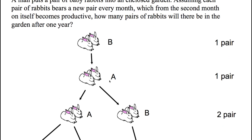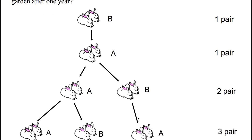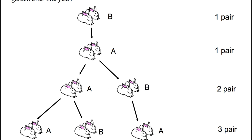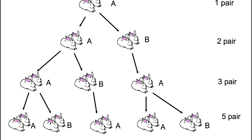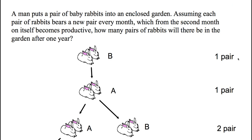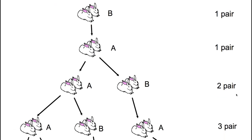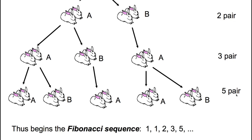The B stands for baby and the A stands for adult. We have one pair of baby rabbits in the garden to start. That pair of baby rabbits becomes adults a month later. Once they're adults, they produce a pair of baby rabbits, which then grow to be adults one month later. The adult rabbits we had are still there, and they again produce another pair of baby rabbits — so it's starting to branch out like a tree. The pair of adult rabbits are still there, they produce another pair of baby rabbits which go on to become adults. The original pair produced another pair of baby rabbits. The question is: if this continued, how many would you have in a year?